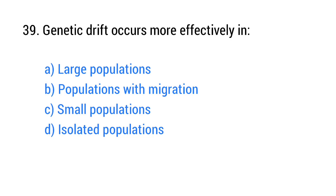Question number 39. Genetic drift occurs more effectively in? The right answer is option C: Small populations.